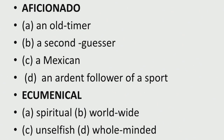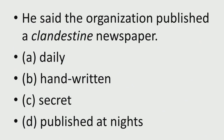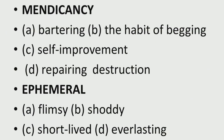'Aficionado' — choices: an old timer, a second guesser, a Mexican, an ardent follower of a sport. 'Ecumenical' — choices: spiritual, worldwide, unselfish, whole-minded. There is a word like 'clandestine': 'He said the organization published a clandestine newspaper.' Choices: daily, handwritten, secret, or published at nights. 'Mendicancy' — possible meanings: bartering, the habit of begging, self-improvement, repairing, destruction.